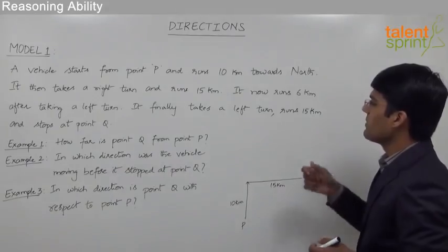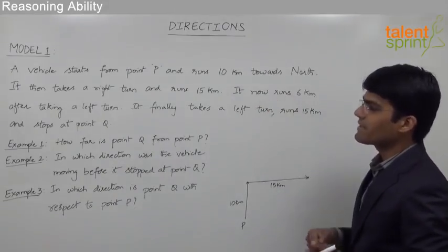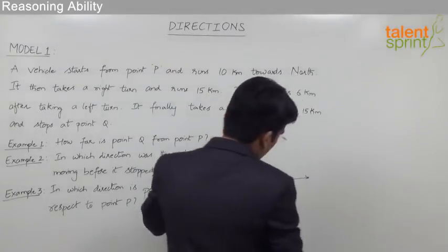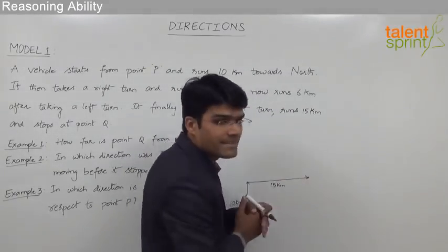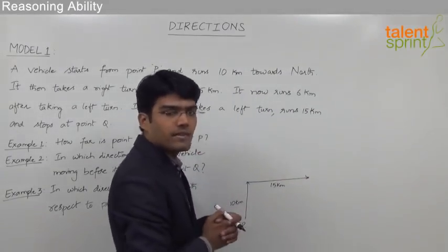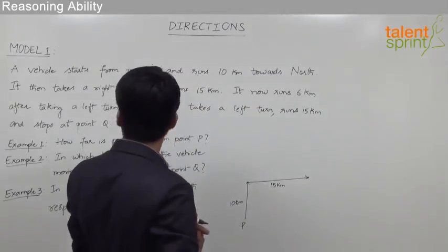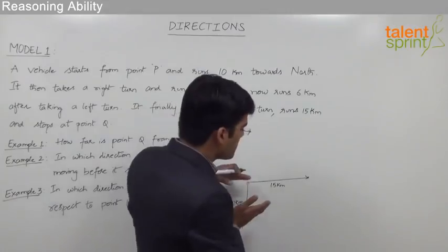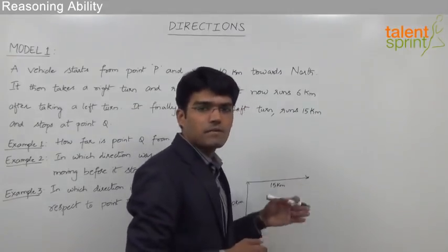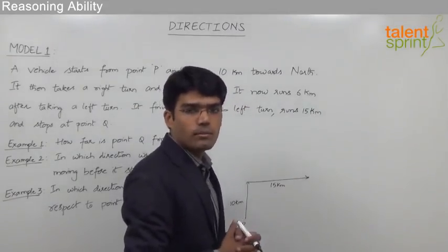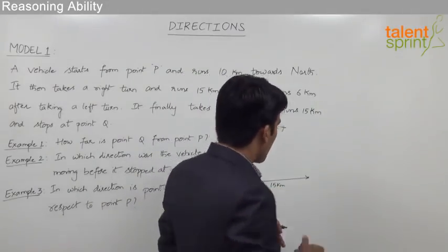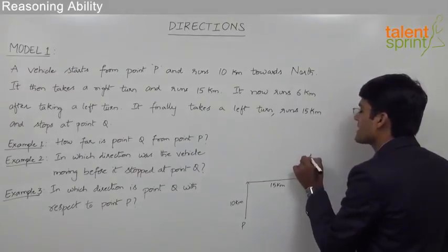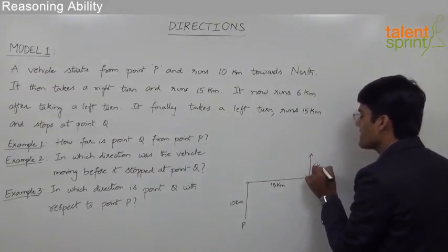After covering 15 kilometers, it now takes a left turn and runs 6 kilometers. The vehicle was moving towards east, and when moving east the left of the person is towards the top — that is, north. So the vehicle turns north and covers a distance of 6 kilometers.